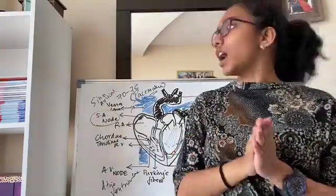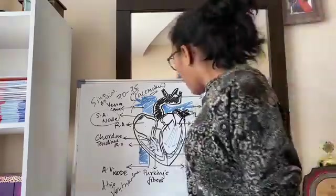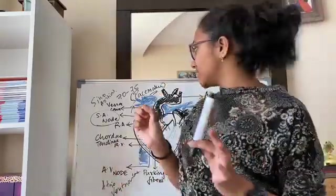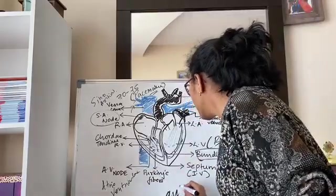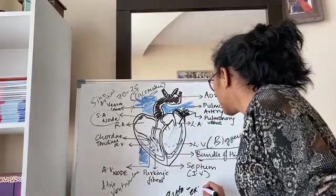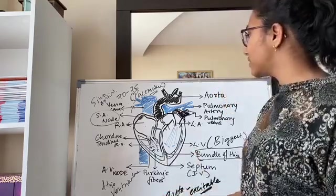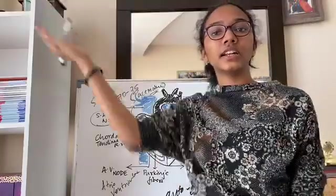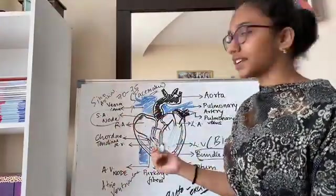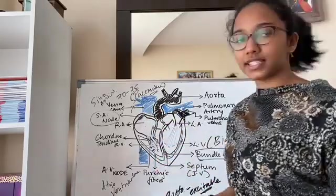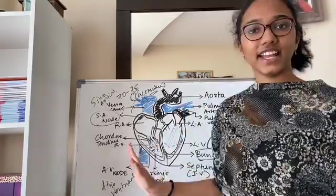I've only missed one term—I've already explained it to you but just remember: our heart is auto-excitable. Pretty self-explanatory. It doesn't need any external stimulus to start beating. Auto-excitable—it has internal stimulus-providing structures like SA node, AV node, etc. So this is about the anatomy of the heart and we're done for today's class.